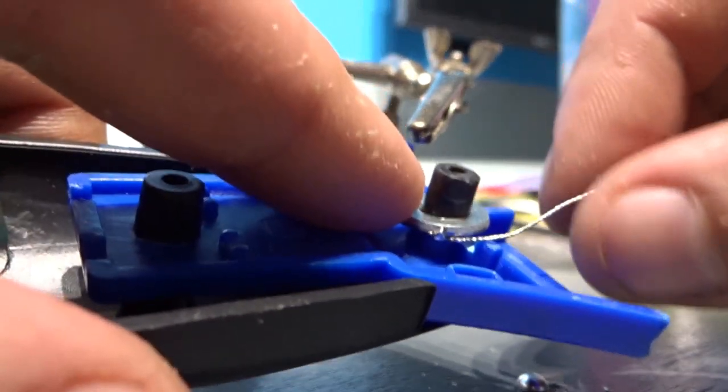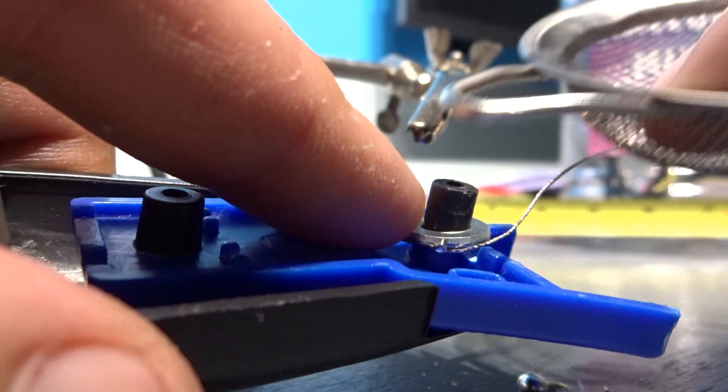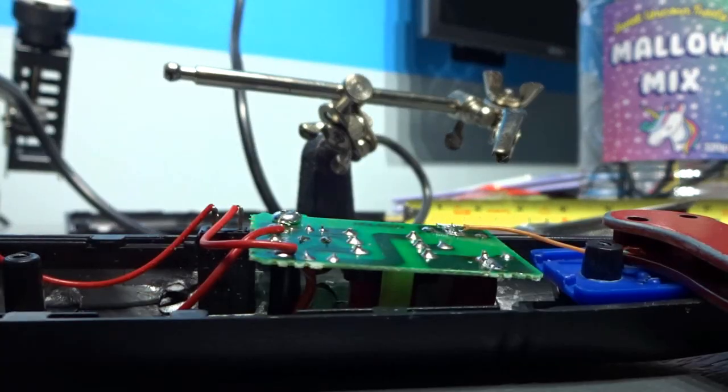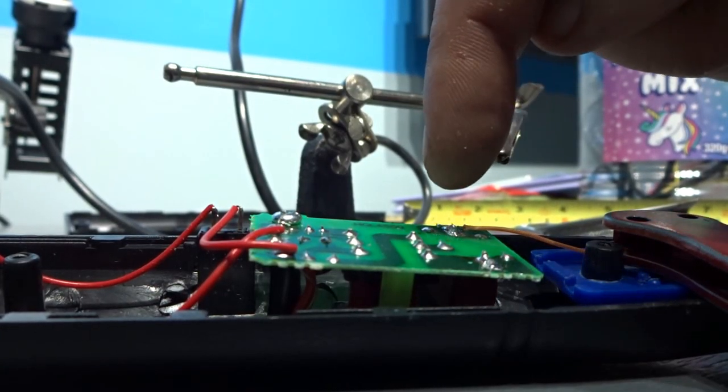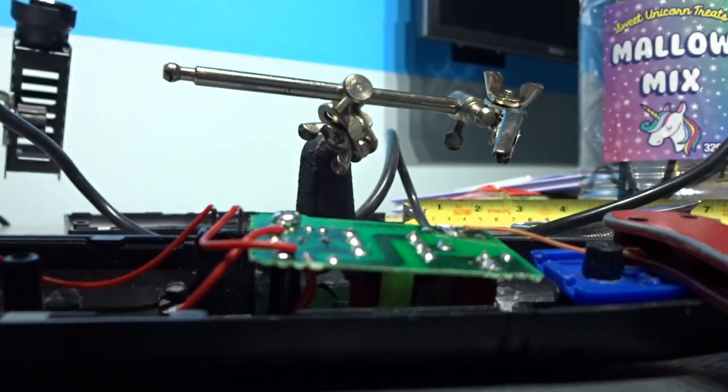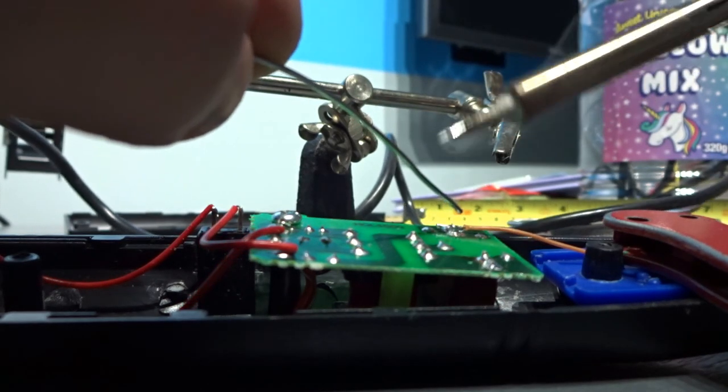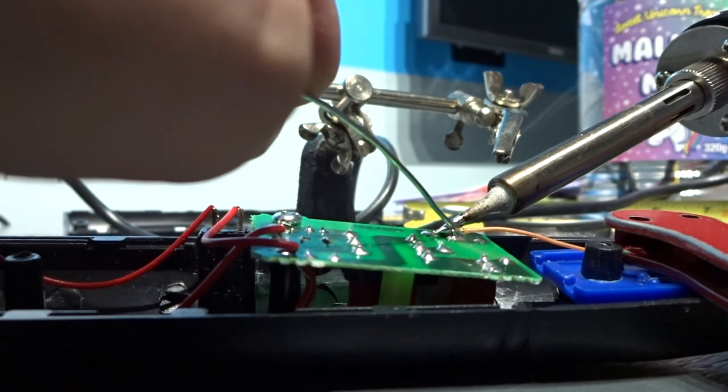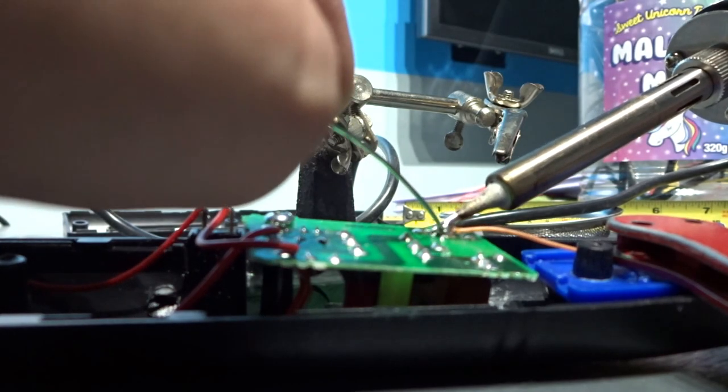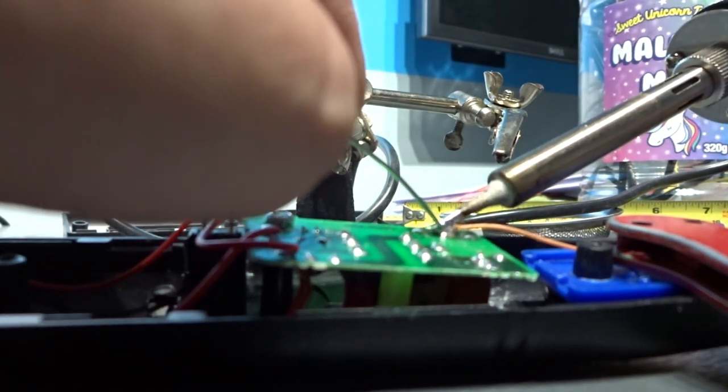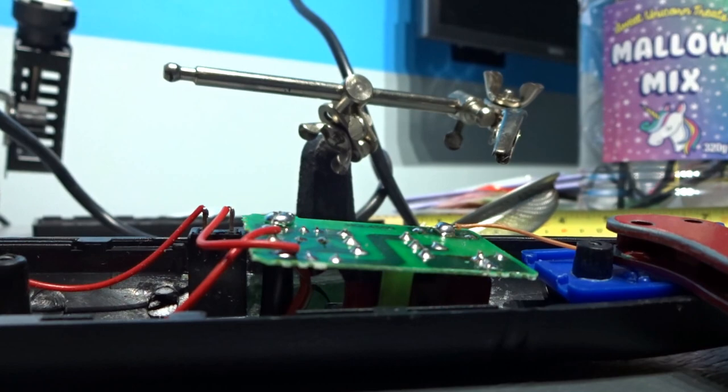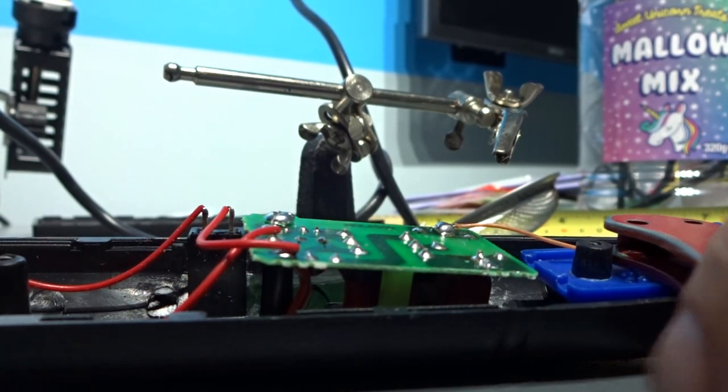The next step is soldering that live wire to the circuit board where I took the other red wire from. The idea of good soldering is feed the solder into the job and heat the area up. There you go, spot on. That's a good joint, that's going nowhere.